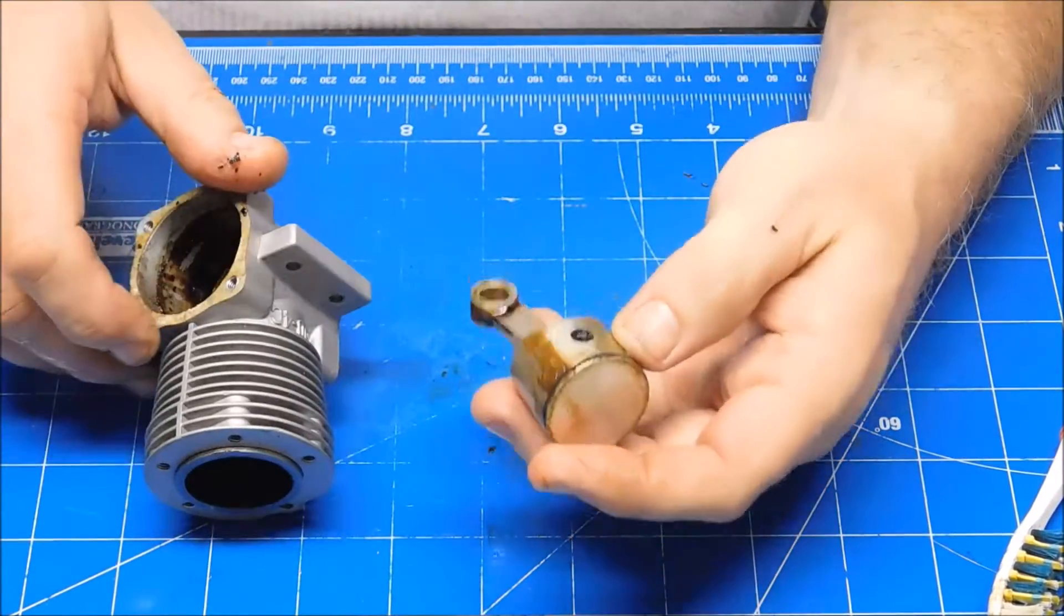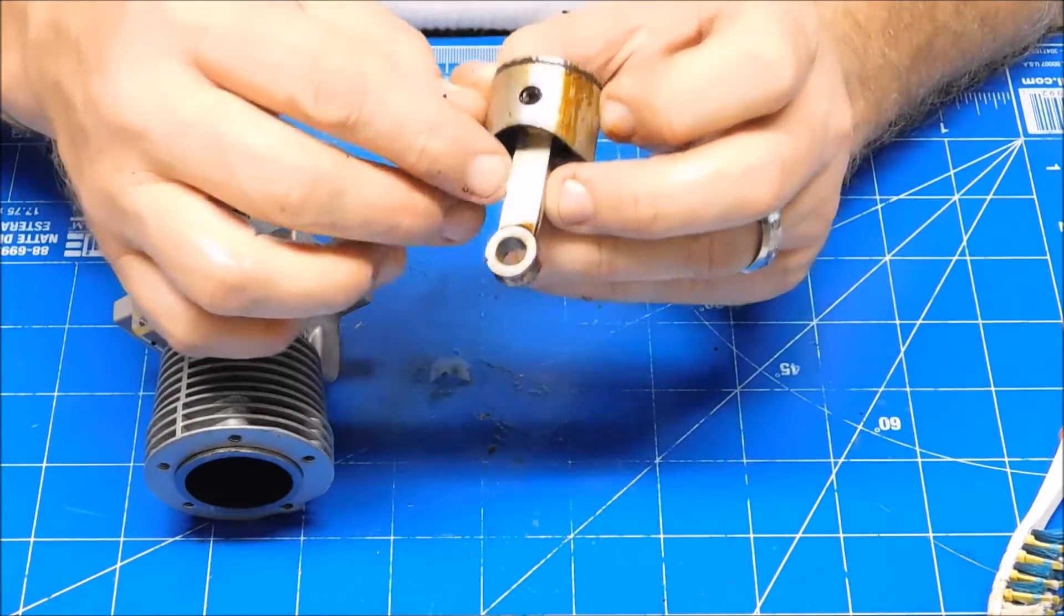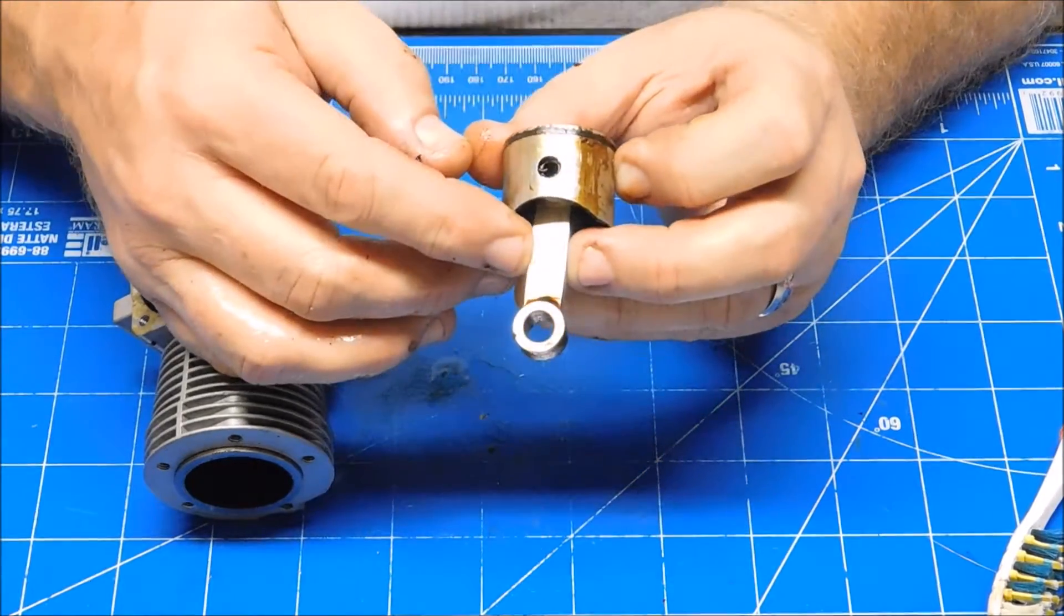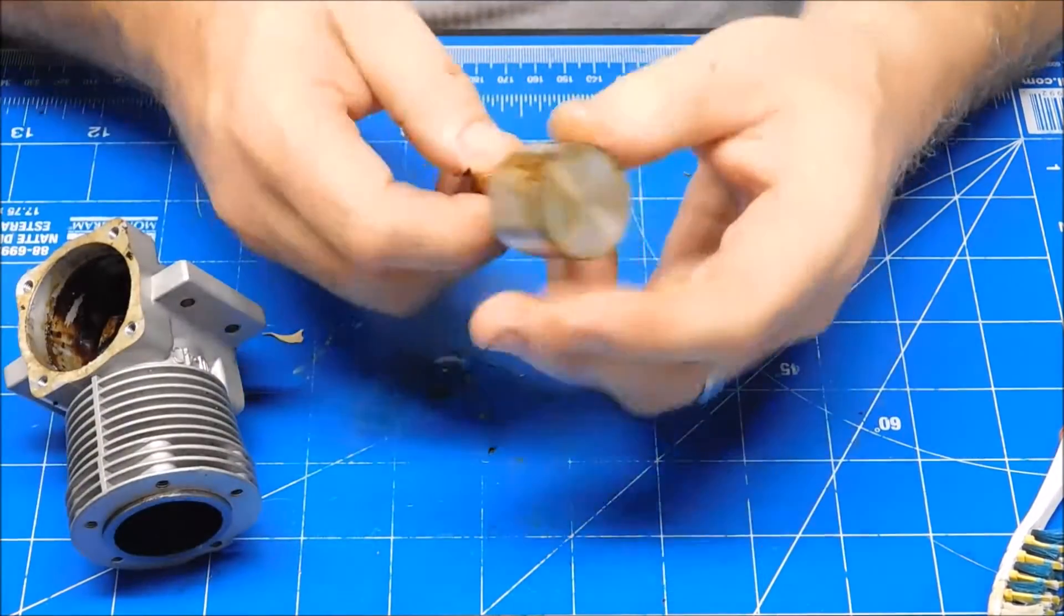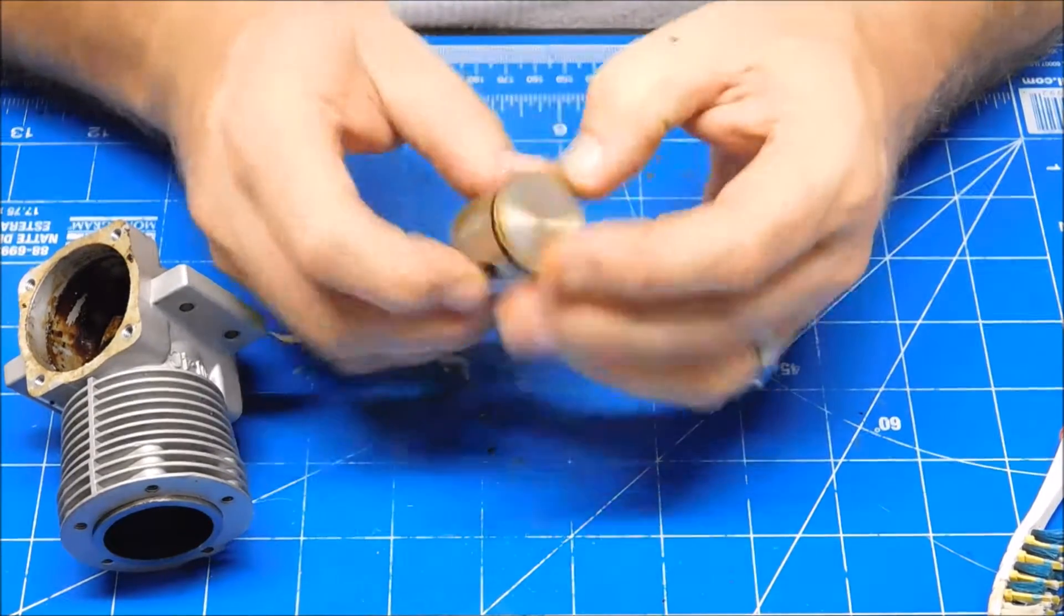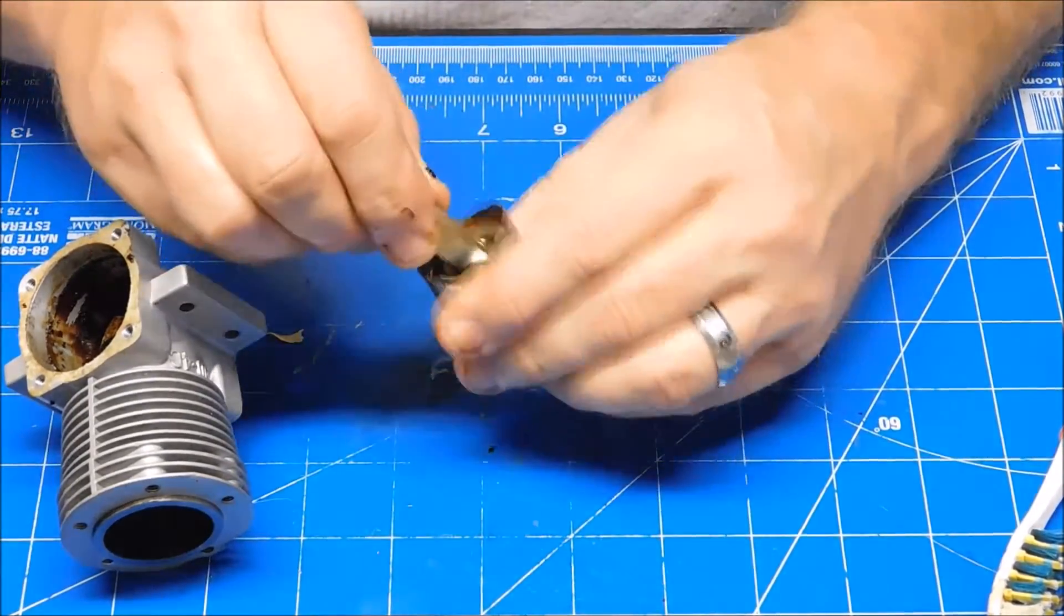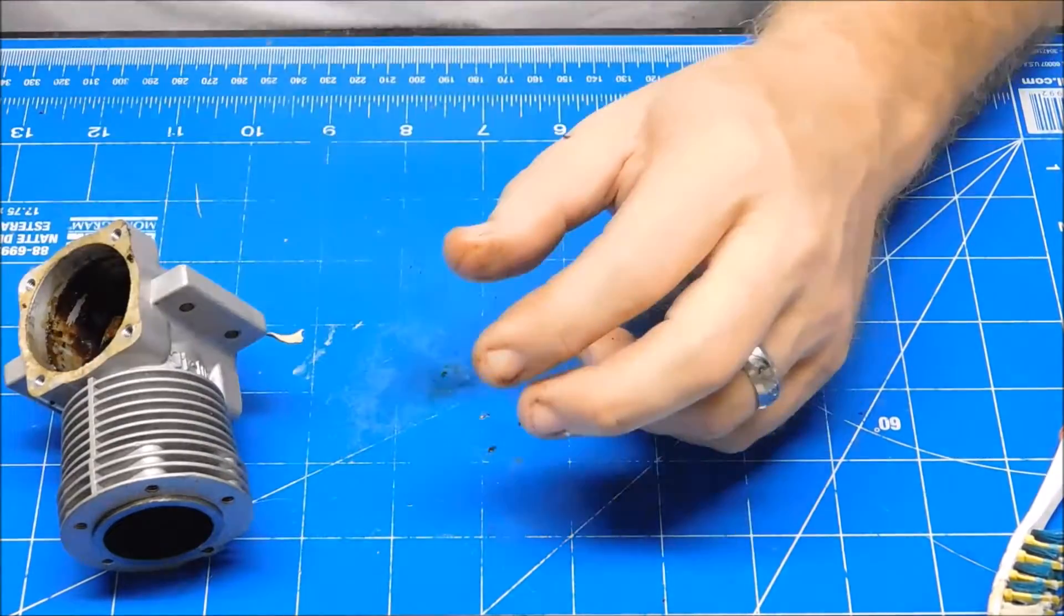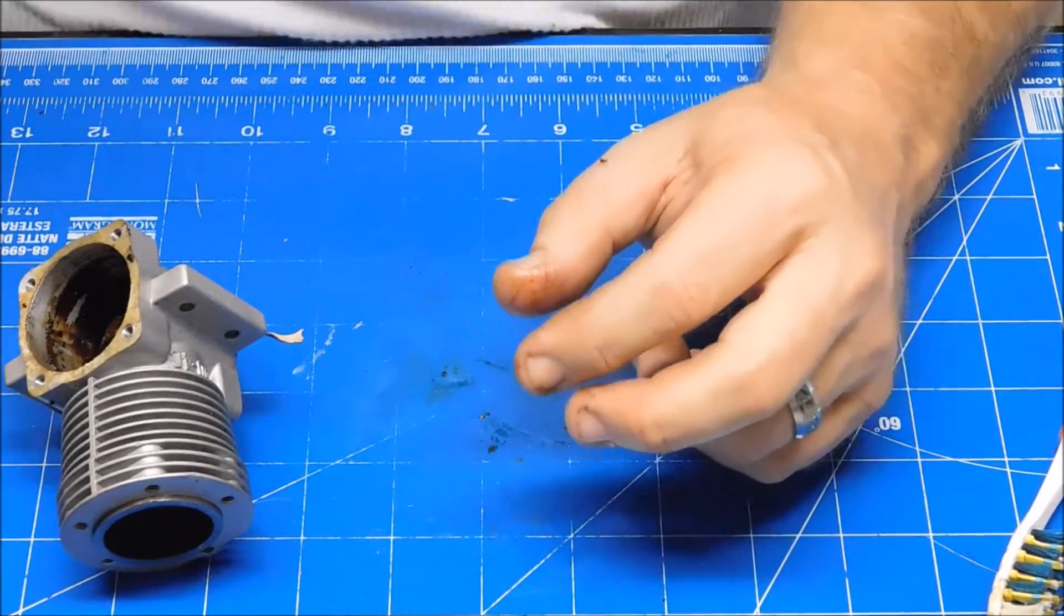Okay, there we go. Indian pistons have a nice F carved in the front for front. As suspected, that ring is completely compressed. That whole thing is going in Totally Awesome Cleaner too.